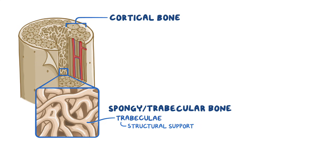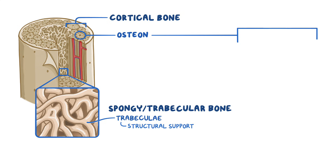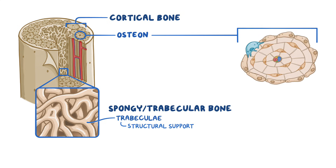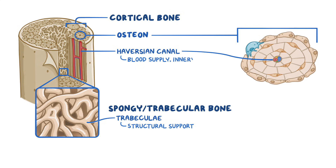The cortical bone, in turn, is made up of many functional, pipe-like units called osteons, which run through the length of the bone. In the center of these osteons, there are hollow spaces called Haversian canals, which contain the blood supply and innervation for the bone cells.